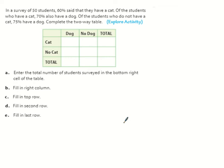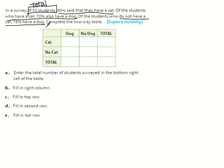Now we're going to practice filling in a blank two-way table. In a survey of 50 students — that's our total — 60% said they have a cat. The first step is to enter the total number of students surveyed in the bottom right of the table. So we put 50 there.